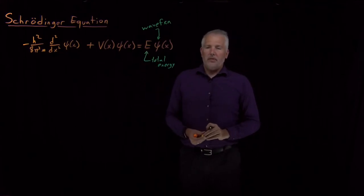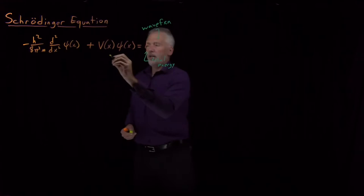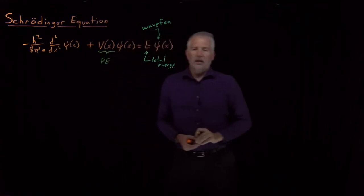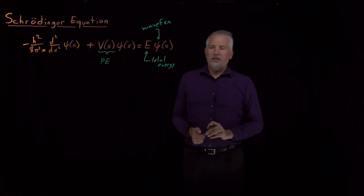E, this capital E on the right side of the equation, is the total energy of the particle. That energy has two parts. V(x) is the potential energy of a particle at some position x.